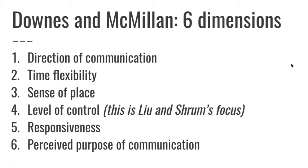Looking at another set of ideas around interactivity, Downs and Macmillan identify six different dimensions. The fourth is specifically around control, which is what Liu and Shrum focused on. But they also identify other dimensions: the direction of communication — is it one way, two ways, or multiple directions? Time flexibility, which we've mentioned. Sense of place is quite interesting — does this immerse you in an experience? How responsive is the piece of storytelling? And what is the purpose of the communication? That's one important dimension to think about.